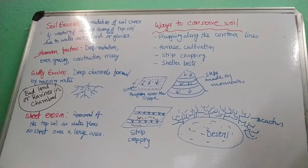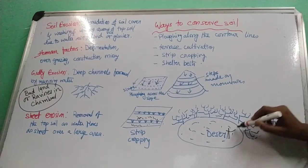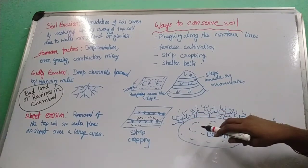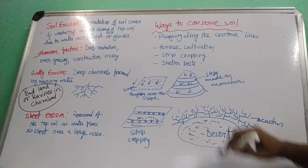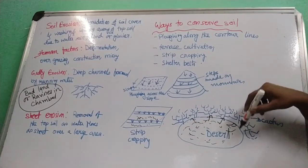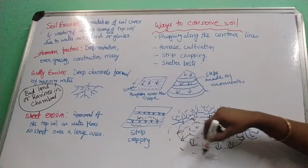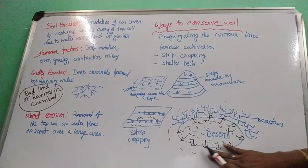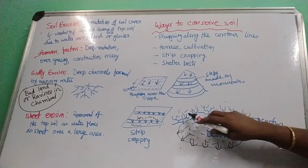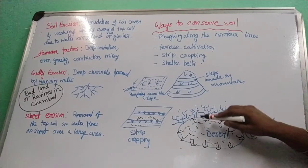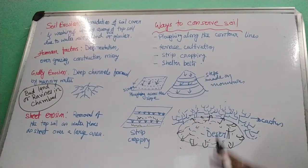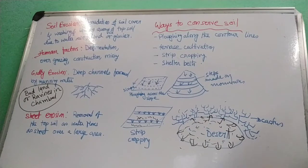Finally, shelter belts. In a desert, if a sandstorm occurs, sand flies away from the main desert region and the desert expands. However, if you plant cactus along the margins of the desert, the cactus acts as a barrier, preventing the sand from spreading outward, thus stopping the desert from growing. This completes our discussion of the chapter. I hope this session has been helpful — please take down the notes. Thank you.